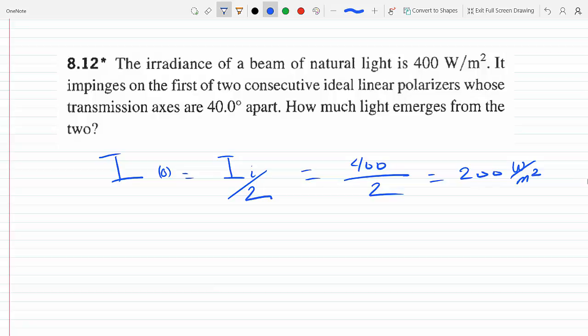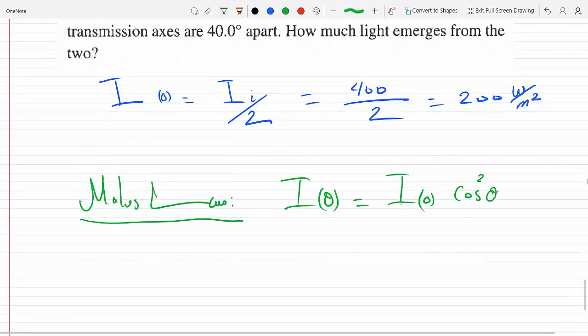For the second polarizer at 40 degrees, we can use Malus's Law. Malus's Law says that the irradiance at some angle theta is equal to I_0 times cosine squared theta.